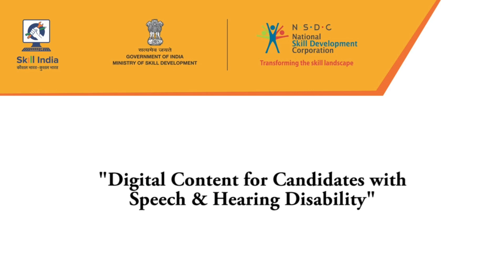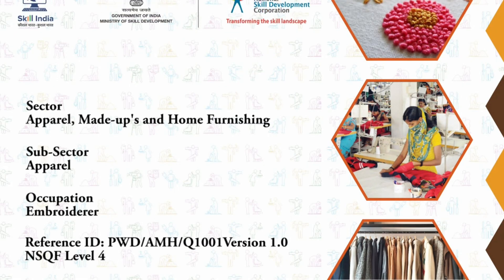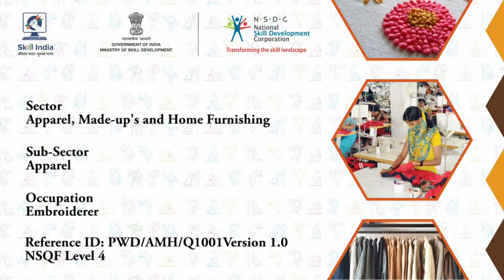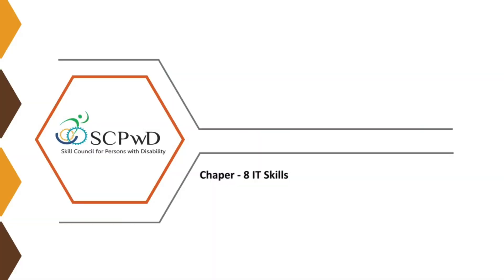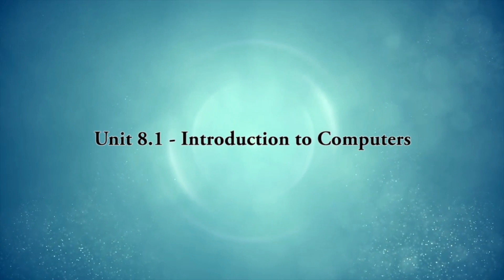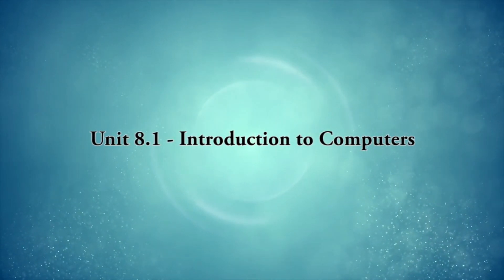Digital Content for Candidates with Speech and Hearing Disability. Sector: Apparel, Made-Ups and Home Furnishing. Subsector: Apparel. Occupation: Embroiderer. Reference ID: PWD AMH Q1001, Version 1.0, NSQF Level 4. Chapter 8: IT Skills, Unit 8.1 — Introduction to Computers.